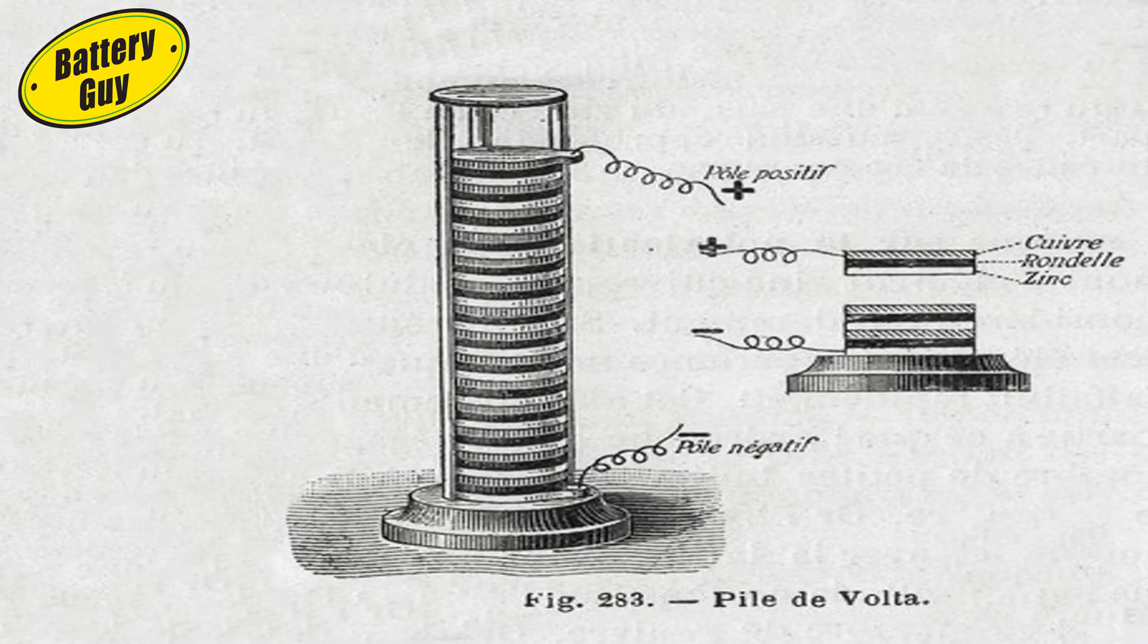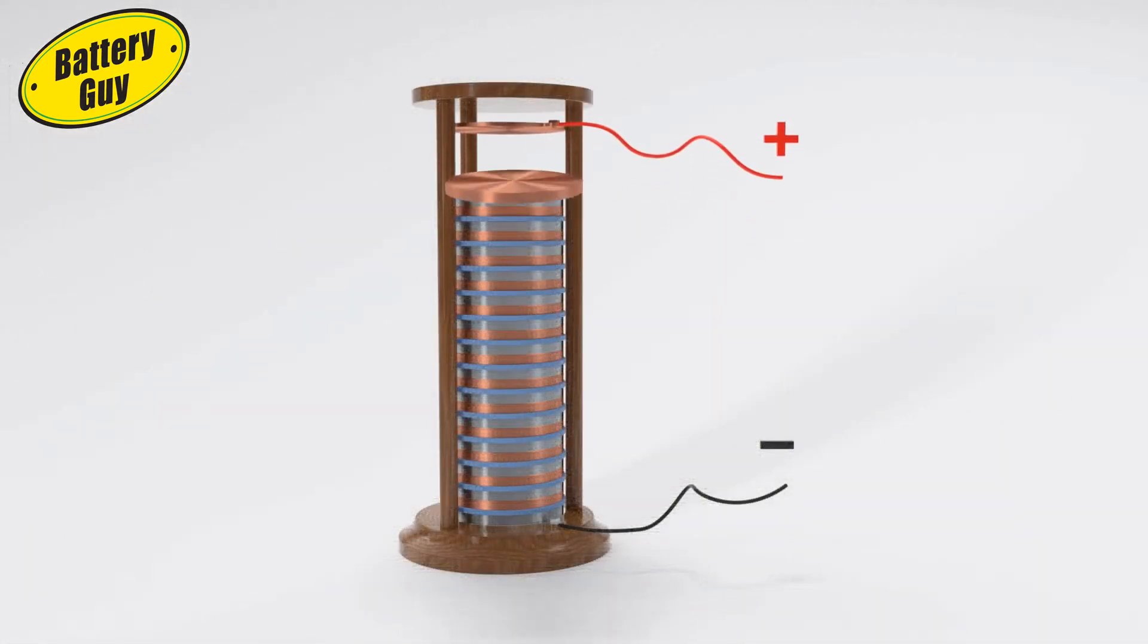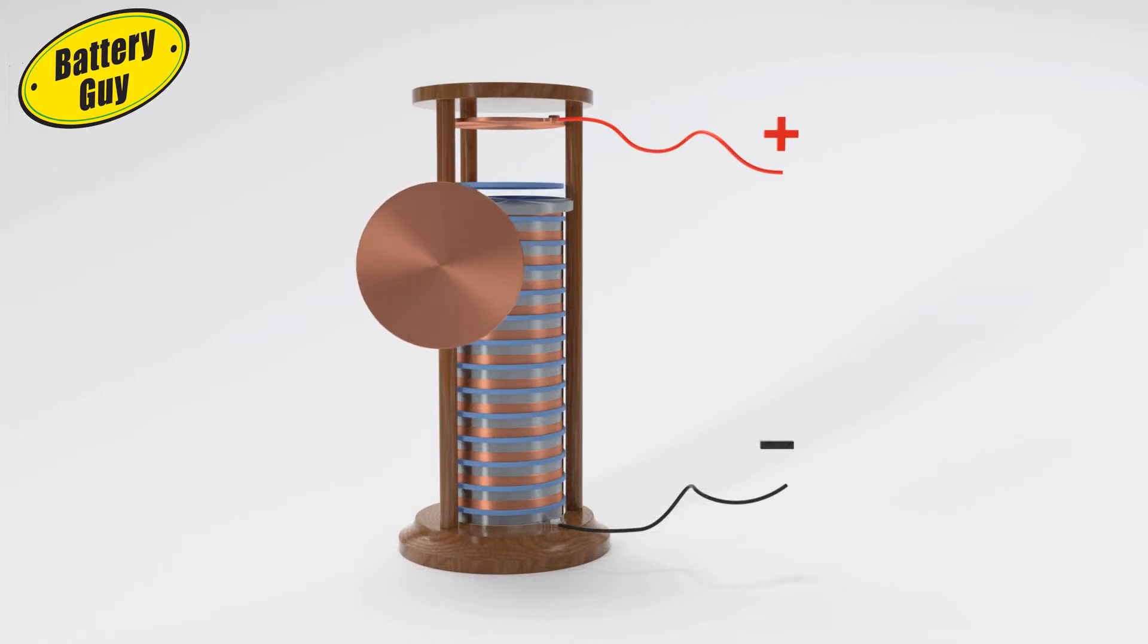The basic principle of battery construction has not changed to this day. Batteries are made up of cells, each cell has a positive cathode and a negative anode.